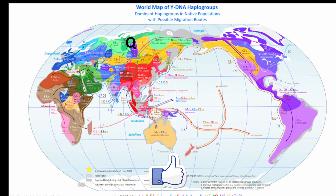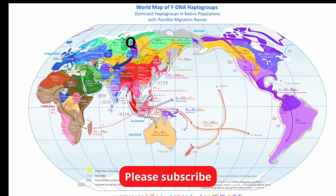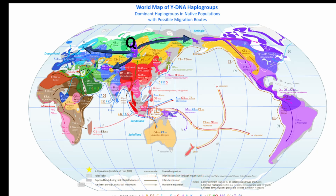If you liked this video, please subscribe and like. Our next video will explore the haplogroup Q and how it spread into Asia, Scandinavia, and the Americas.